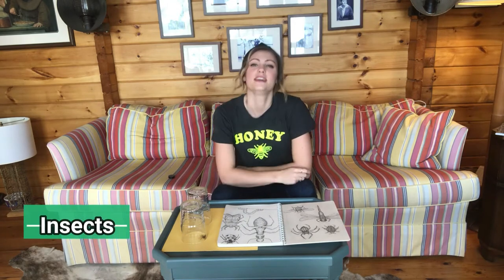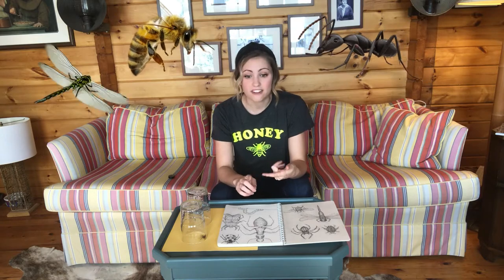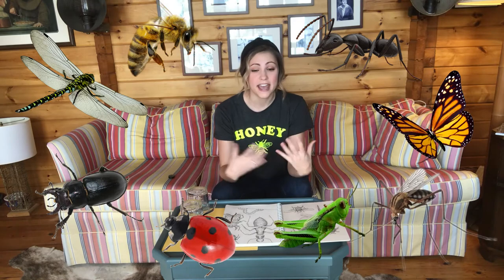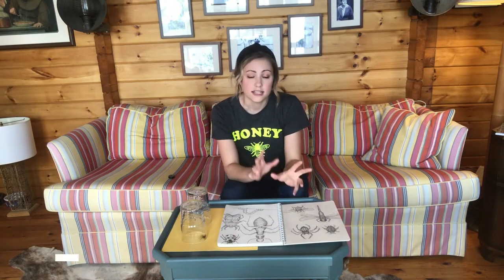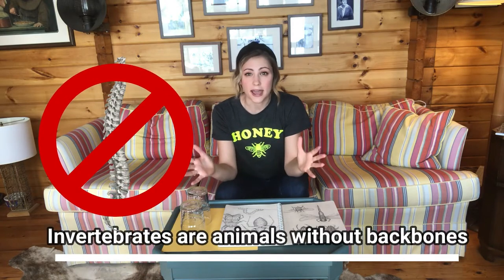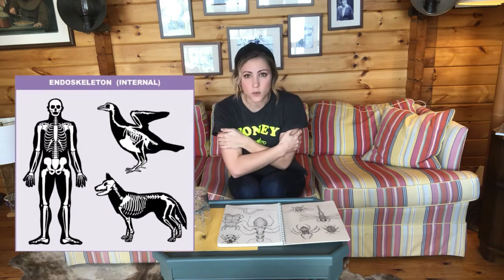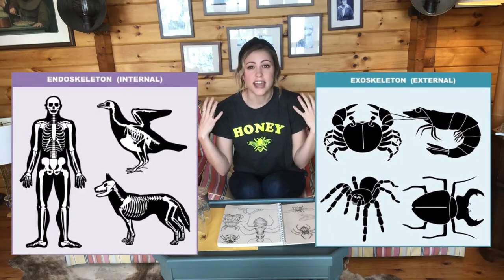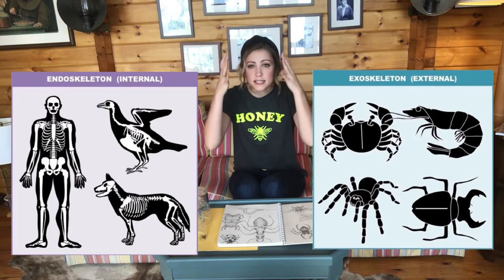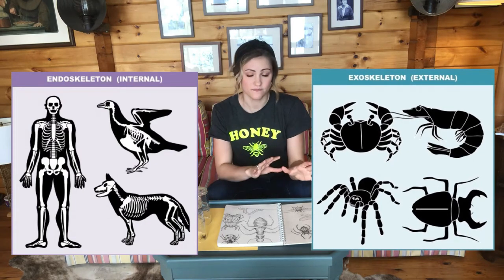Let's begin by talking about insects. Some insects you might have seen outside or in your house include bees, ants, dragonflies, butterflies, beetles, mosquitoes, ladybugs, grasshoppers, and even earwigs. Unlike us, insects are invertebrates, which means they don't have a spine. Instead of having bones on the inside like we do, they have a hard shell called an exoskeleton, which covers their whole body and provides protection and support.